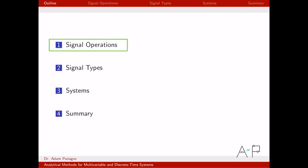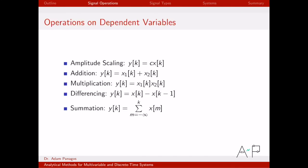So the first signal operation that we'll discuss is what we call amplitude scaling. We're going to work right here on this bullet. We are going to create a new discrete time signal by taking some original discrete time signal and multiplying it by a constant C. That's what we call amplitude scaling.